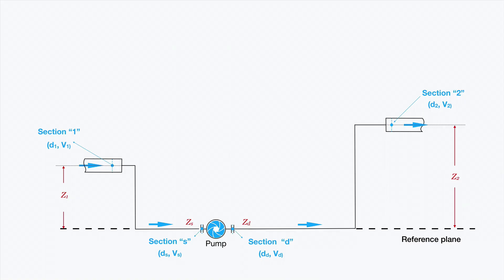We have represented here a pipe system including a pump, with the aim to transport the fluid from pipe section 1 to pipe section 2. We have the fluid in section 1 with certain operating conditions: diameter, velocity, pressure, etc., and the same we have in section 2.